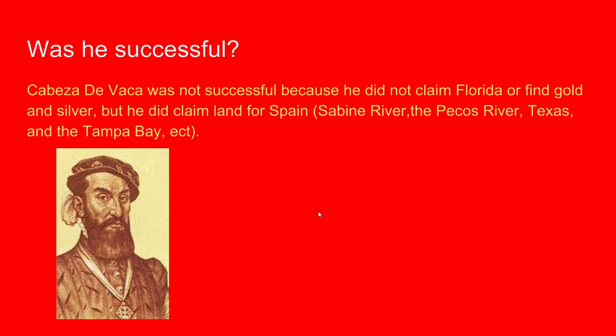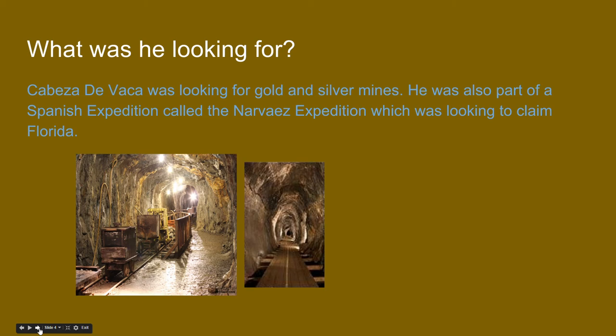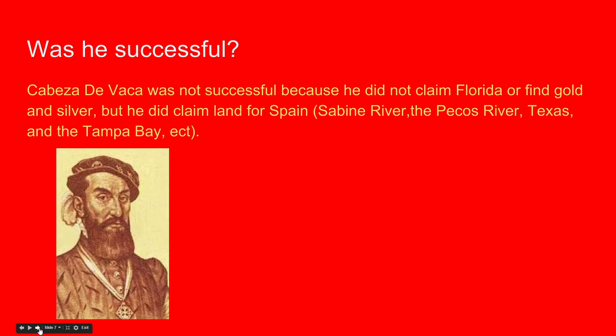Was he successful? It depends on what you're looking at — I'd say half and half. He was looking for gold and silver mines, but he did not find the gold and silver he was looking for. He did not claim Florida either. But he did claim land for Spain — like the Sabine River and the Pecos River in Texas — so you could say he was half and half.